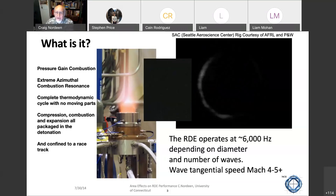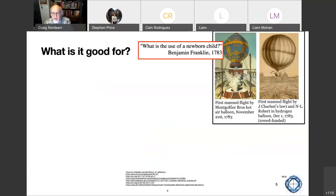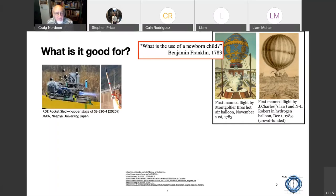So what was it good for? Benjamin Franklin was an eyewitness to the first launch of the Montgolfier Brothers hot air balloon and Charles and Robert's hydrogen balloon way back 1783. And he says, what is the use of a newborn child? And that's kind of where the development of the RDE stands. We're still trying to figure this out.